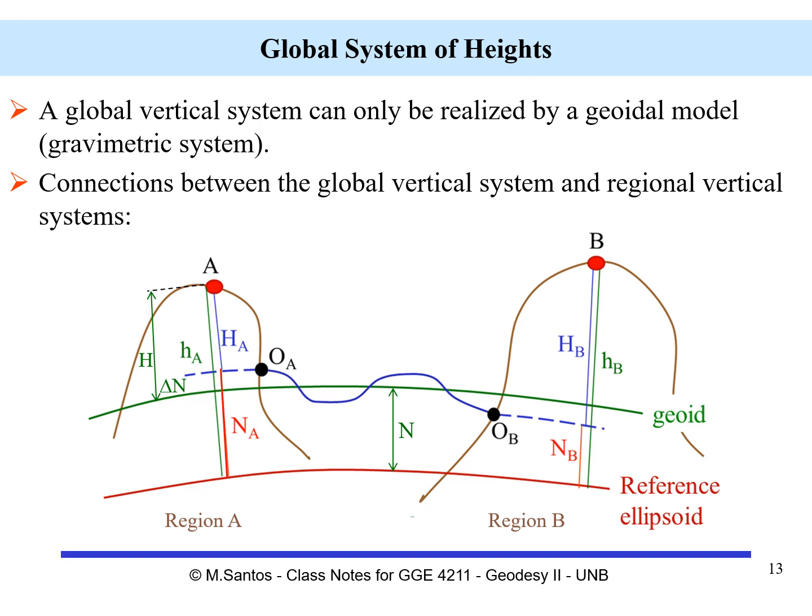In the figure we also have the reference ellipsoid, and we have this global geoid represented in green. If we want to determine the orthometric height, capital H, with respect to this global geoid, we have to take into account the difference between the geoidal heights of the regional geoid and the global datum — represented by delta N.